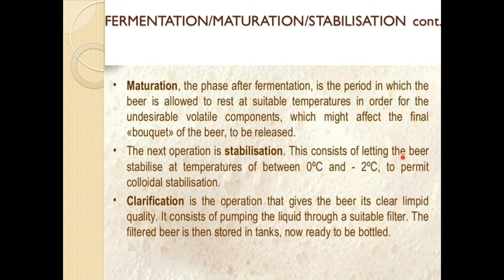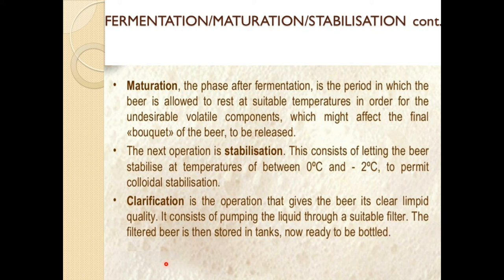The next operation is stabilization, which consists of letting the beer stabilize at a temperature of between 0 and minus 2 degrees Celsius to permit colloidal stabilization. Clarification is the operation that gives the beer its clear, limpid quality — it consists of pumping the liquid through a suitable filter. The filtered beer is then stored in tanks, ready to be bottled.